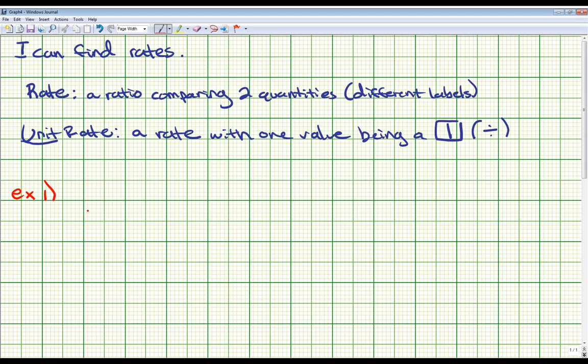For example one, it says writing a rate. The double number line shows the rate at which you earn points for successfully hitting notes in a music video game. Write a rate that represents the situation. So the first thing we'll write down is that we are looking at a double number line, which some of you may not have seen before. So we'll jot that down. This is a double number line. And I'm going to underline it just in case on your test, it asks you to create a double number line. This is what we're going to be making.